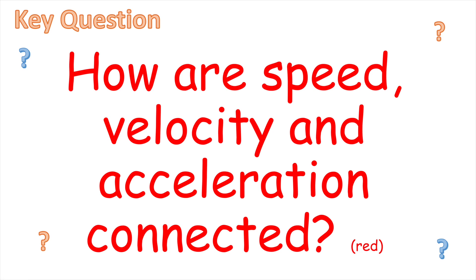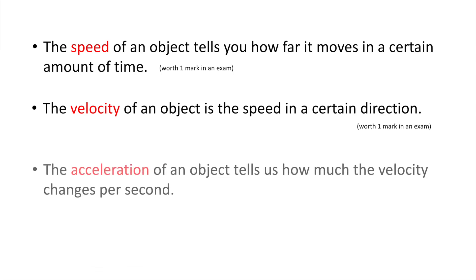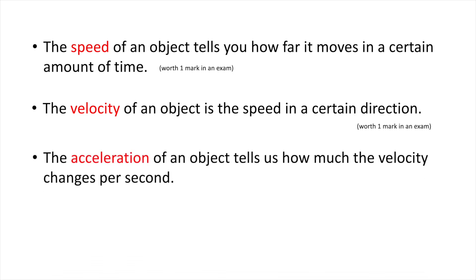How are speed, velocity, and acceleration connected? Well, the speed of an object tells you how far it moves in a certain amount of time. You'll get one mark for saying that in an exam, believe it or not. The velocity of an object is the speed in a certain direction. One mark for that. And the acceleration of an object tells us how much the velocity changes per second. Easy marks.